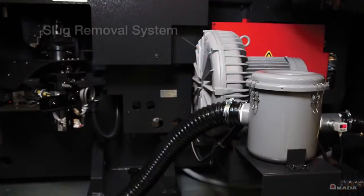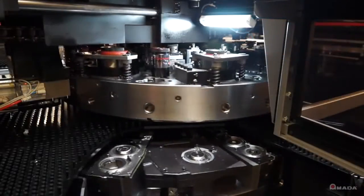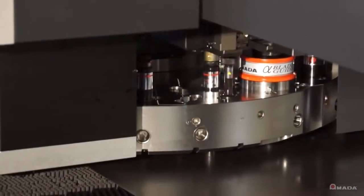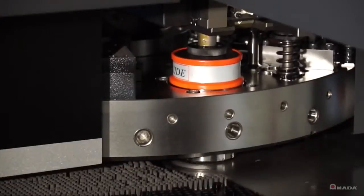A powerful vacuum system virtually eliminates slug pull and is available on all turret stations. This feature also allows reduced punch and die penetration, which can speed up hit rates and reduce tool wear.